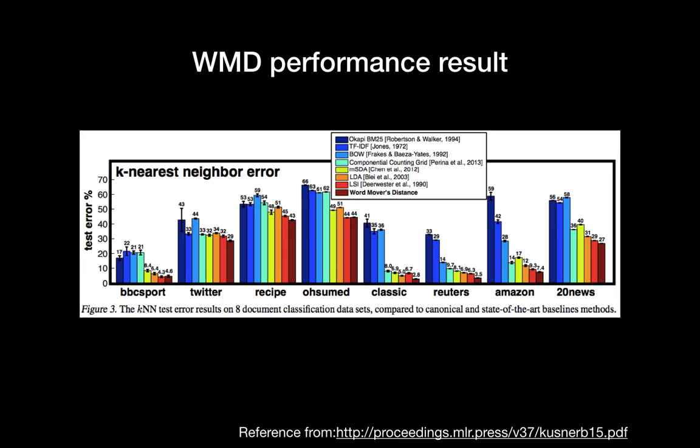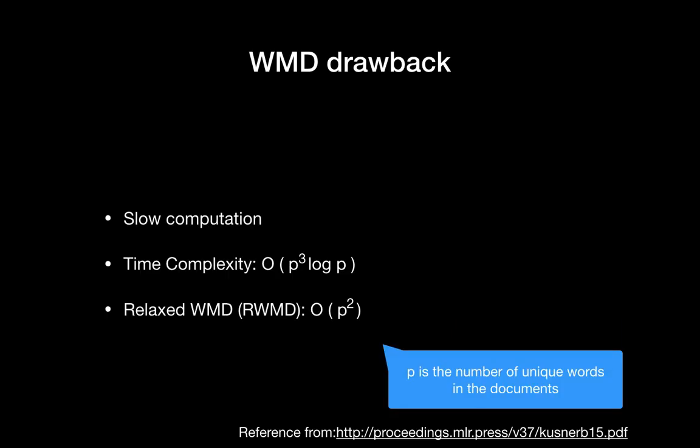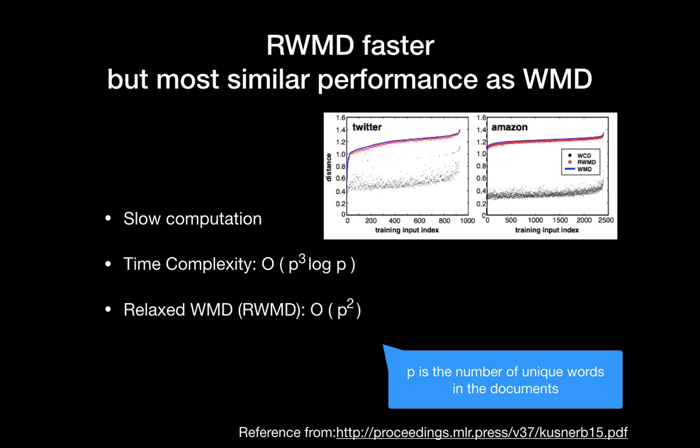The WMD performance results are great — fantastic results across eight different datasets, where WMD is almost always the winner. However, WMD has a drawback of slow computation. The time complexity is O(p³ log p), where p is the number of unique words in the document. So it can be very slow. They made a faster version called Relaxed WMD, or RWMD, which has complexity O(p²) and almost the same performance as the original WMD.